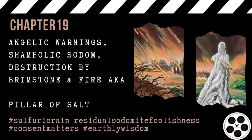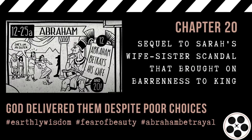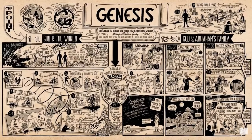Chapter 19: Angelic warnings, the shambolic destruction of Sodom with brimstone and fire, and this is where we hear about the pillar of salt. Chapter 20 was the sequel to the Sarah wife-sister scandal, which happened again for some odd reason and brought barrenness to the king. God delivered them despite their poor choices. Through these titles, we can see Genesis has many stories, but the big picture is how God keeps restoring and forgiving his people.